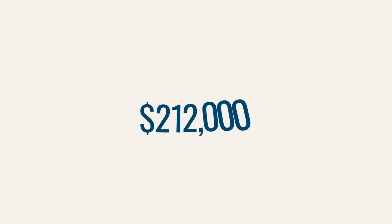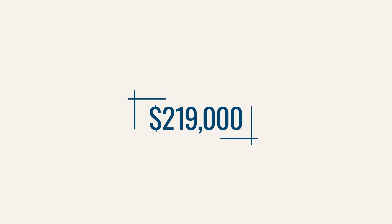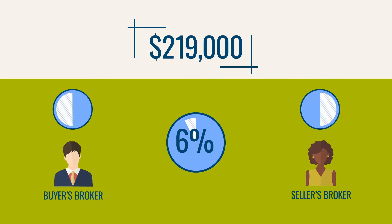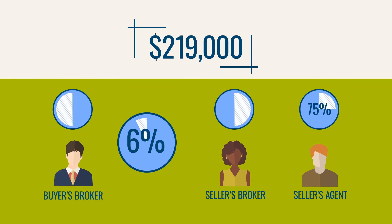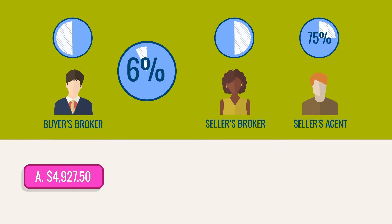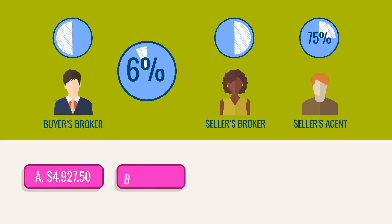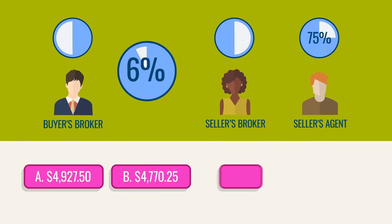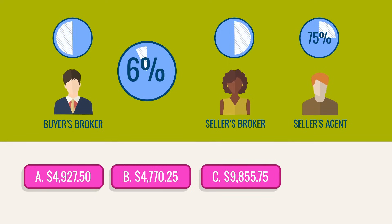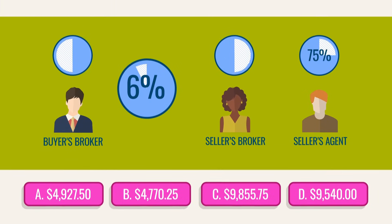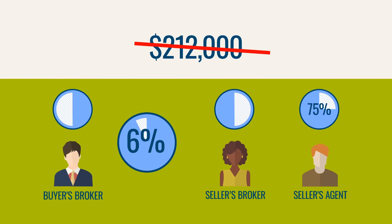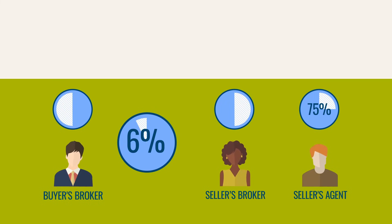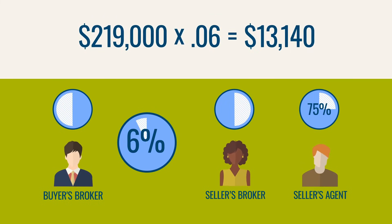Practice question number four. A property is listed for $212,000, but due to a bidding war it sells for $219,000. The commission is set at 6% and split evenly between the buyer and seller's broker. The selling agent has an agreement with his broker to receive 75% of the split paid to the broker. What is the amount the seller's agent receives after closing? A: $4,927.50. B: $4,770.25. C: $9,855.75. D: $9,540. Note that the $212,000 listing price is a red herring — information provided that is not useful in answering the question. Do not fall for that trap. Start by finding 6% of $219,000: $219,000 times 0.06 equals $13,140.